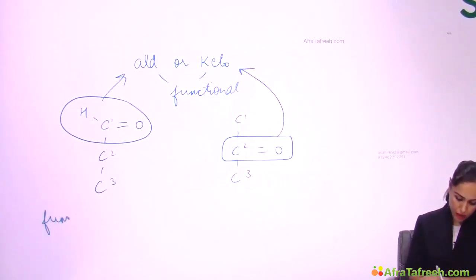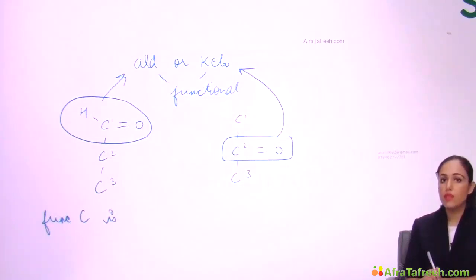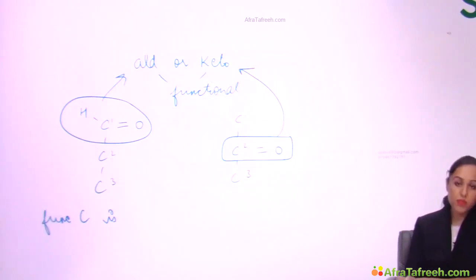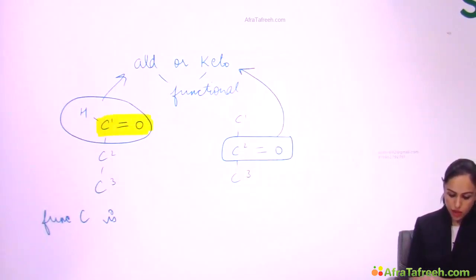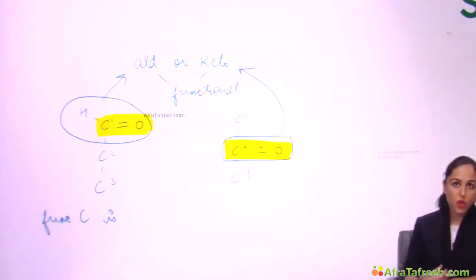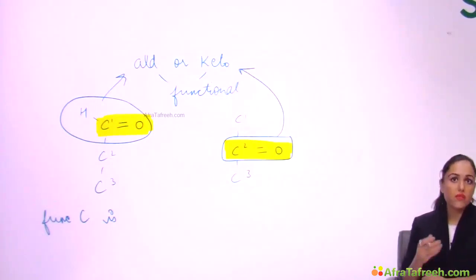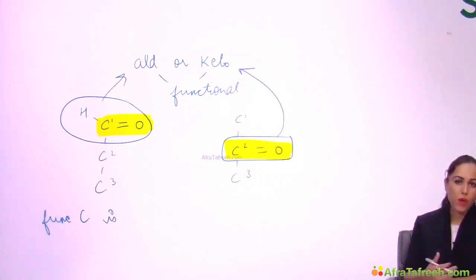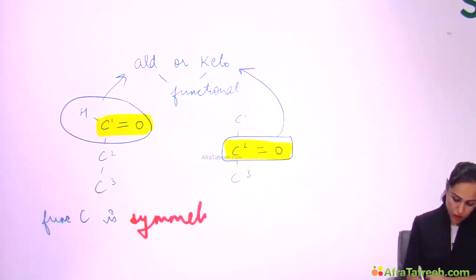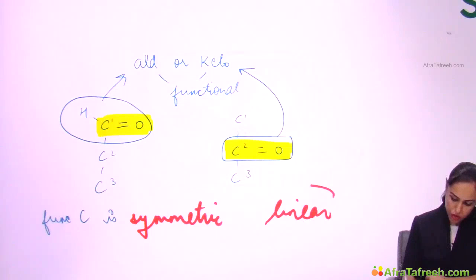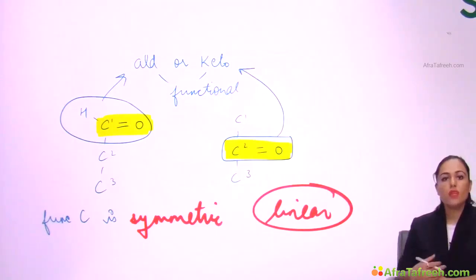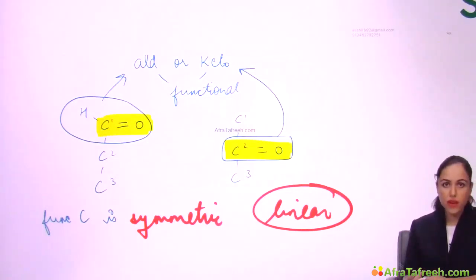Now, is the functional carbon symmetric or asymmetric? The functional carbon in carbohydrates — whether aldehyde C1 or keto C2 — always has a double bond oxygen (C=O), so it is a symmetric carbon in linear configuration. However, only in linear configuration is it symmetric; in cyclic configuration it becomes asymmetric, which we'll see later when dealing with anomerism. So we are done with the basics of carbohydrates — the next video will deal with isomerism.